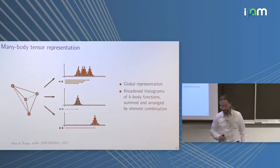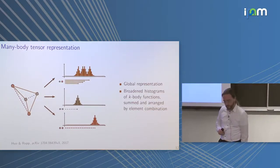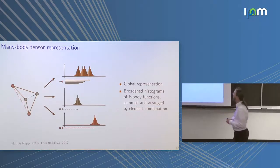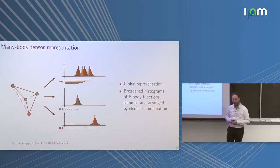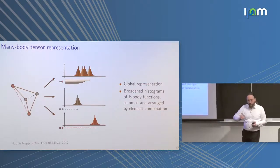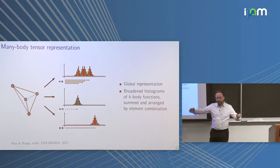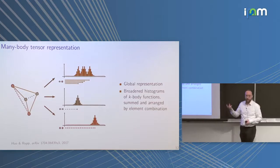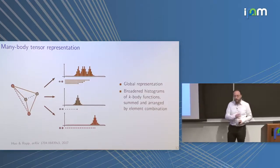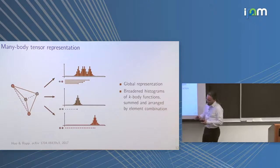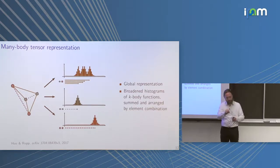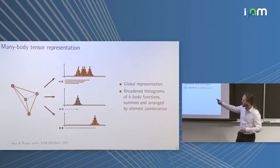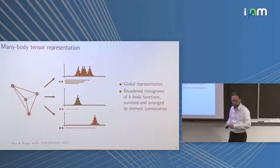A question was raised about how MBTR differs from fingerprints in cheminformatics. A fingerprint uses a dictionary of substructures — like a five-carbon ring — and counts how often it appears. The difference here is that in MBTR we take exact distances into account rather than just recognizing abstract structural motifs like functional groups. That's the only difference.